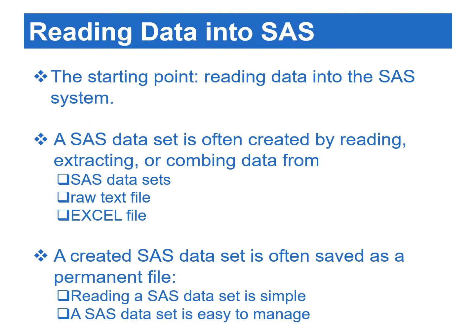The starting point for most projects is reading data into the SAS system. The most frequently used input file formats are SAS data sets, raw text files, and Excel spreadsheets. A SAS data set is often created by reading, extracting, or combining data from different types of files. Once a SAS data set is created, we tend to save it as a permanent file. Not only is re-reading a SAS data set simple, but it is easier to manage than other types of file formats.